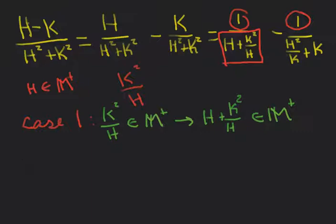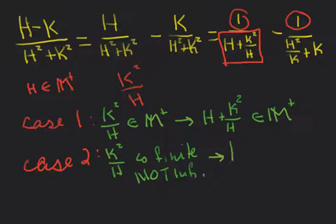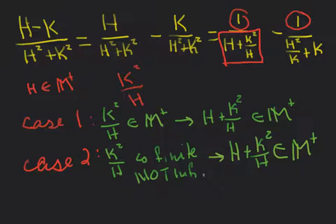Case 2: k squared over h is finite, but not infinitesimal. In this case, h plus k squared over h — well, this is a finite number added to an infinite number, so it still stays an infinite number.